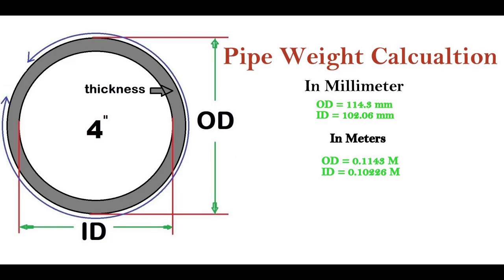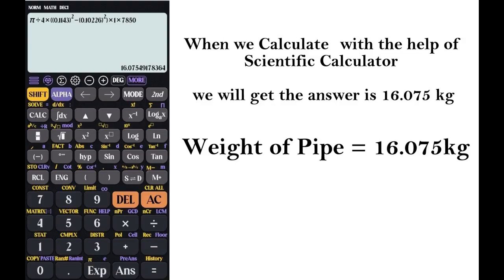So when we calculate with the help of a scientific calculator, after inserting the values of OD, ID, and pipe length, we will get the answer as you see in the image: 16.075 kg. The weight of 1 meter 4 inch pipe is 16.075 kg.